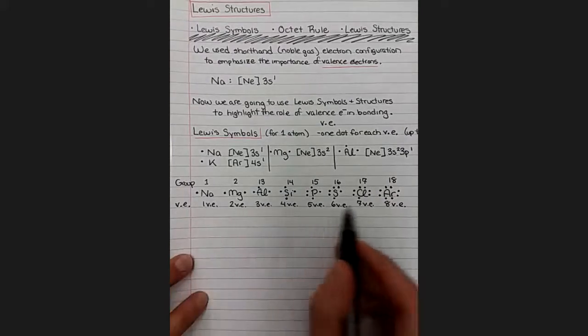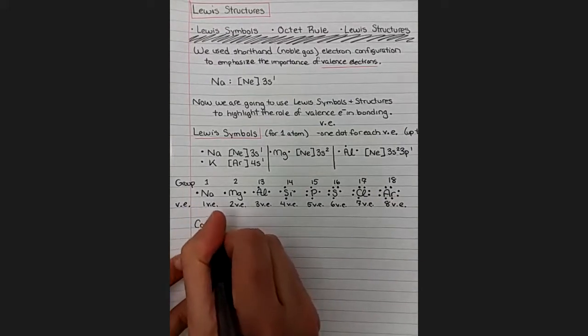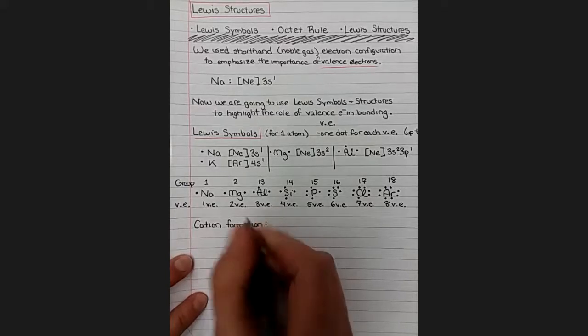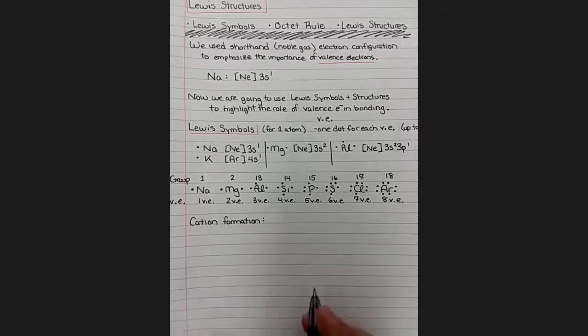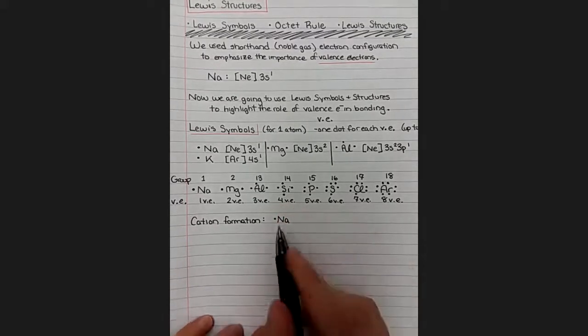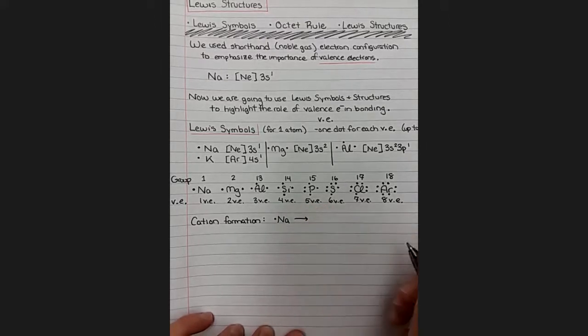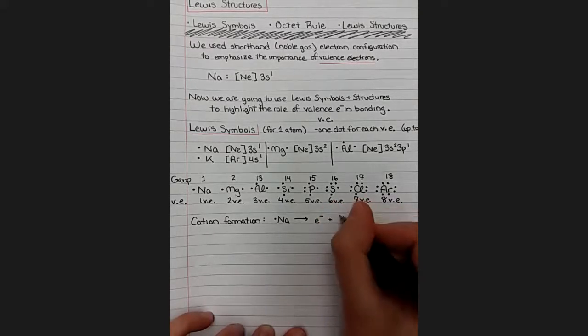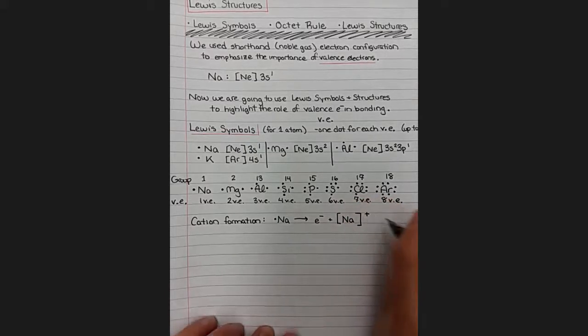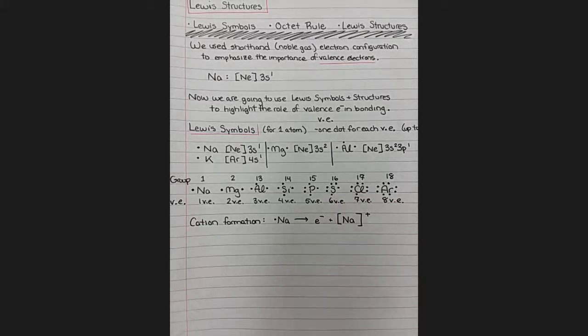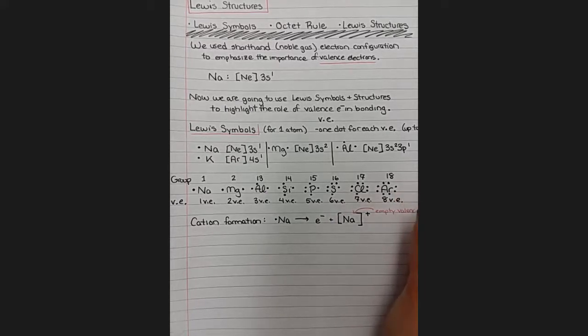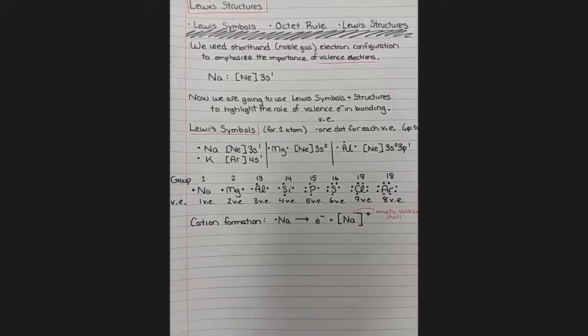We can also form ions. These are just neutral atoms. We can use these Lewis symbols to represent the formation of a cation. For example, sodium likes to form sodium plus by losing that one valence electron. So we can show neutral sodium with its one valence electron indicated. And when it becomes a cation, it loses that one electron. What's left behind is a sodium plus. We'll put it in a box because in theory there would be some electrons here, but we're highlighting the fact that that shell is empty. Sodium now has an empty valence shell, which means that the next shell, which is full, would be considered the official valence shell.